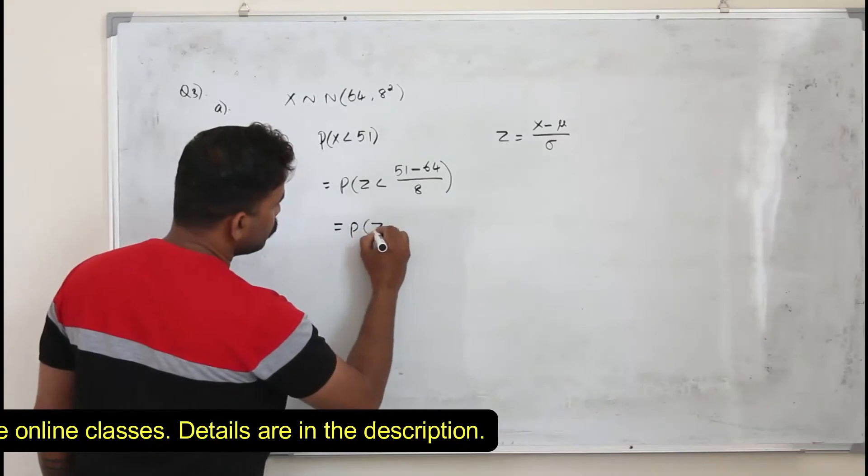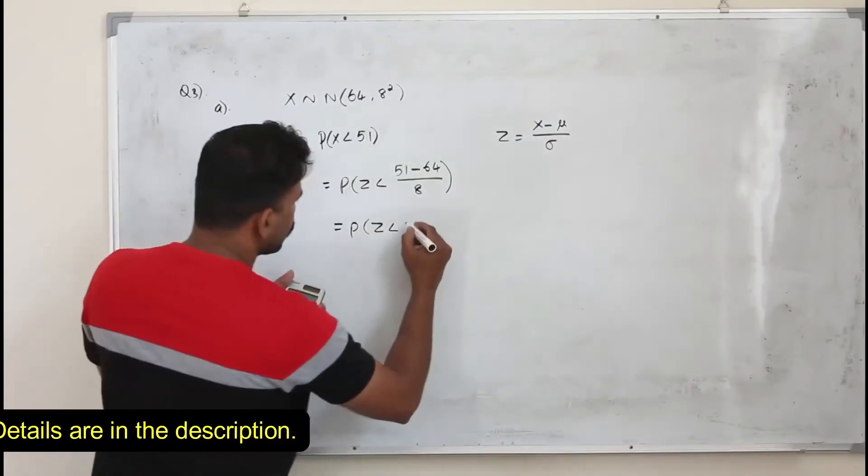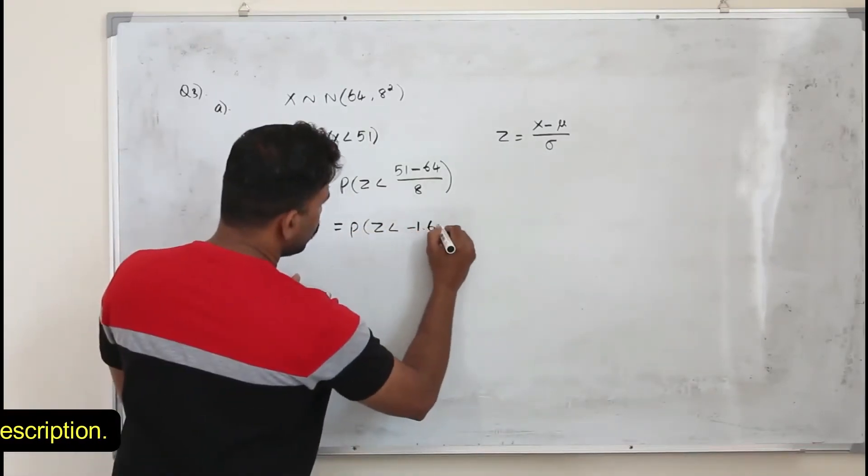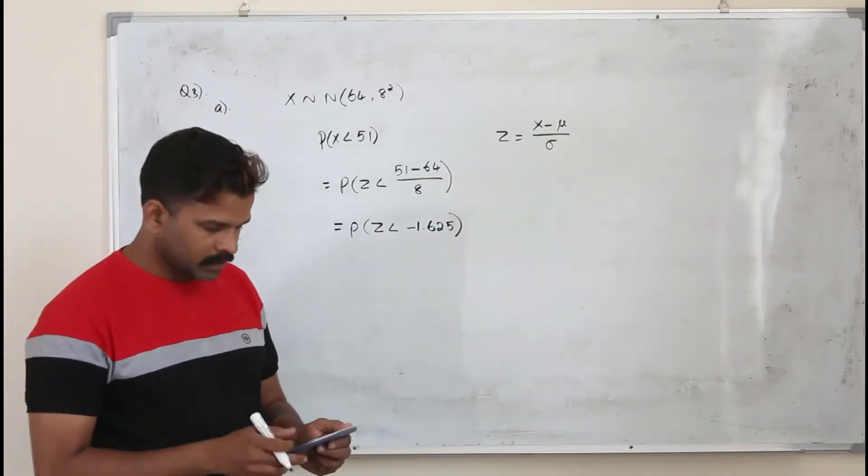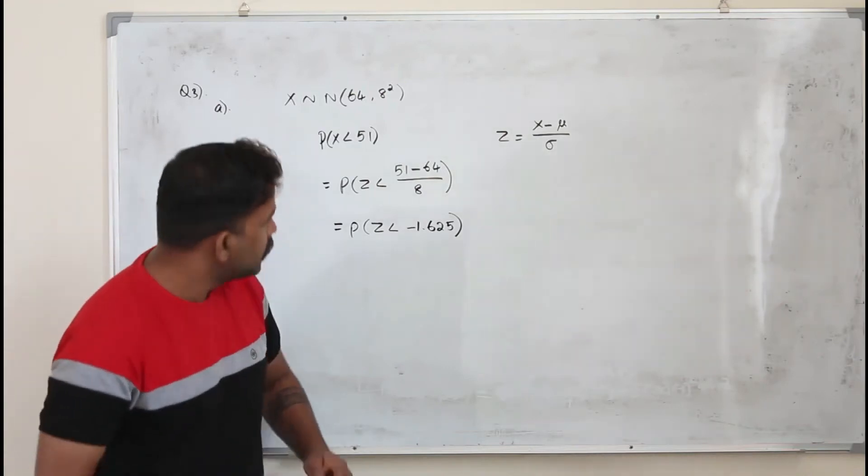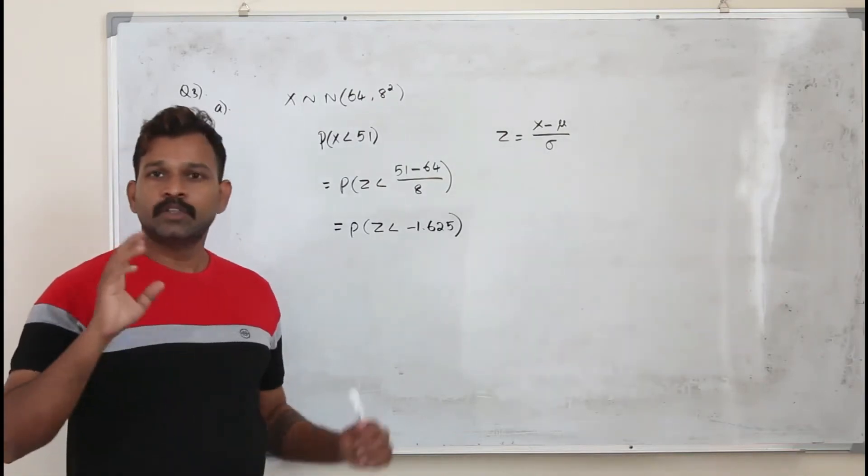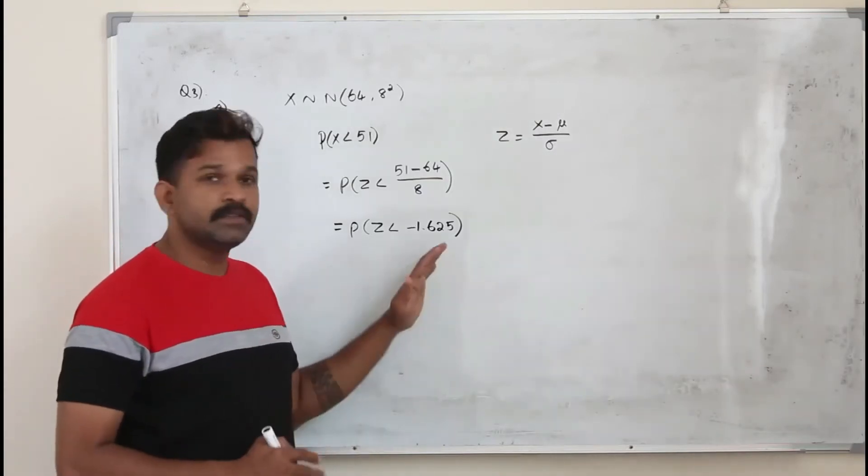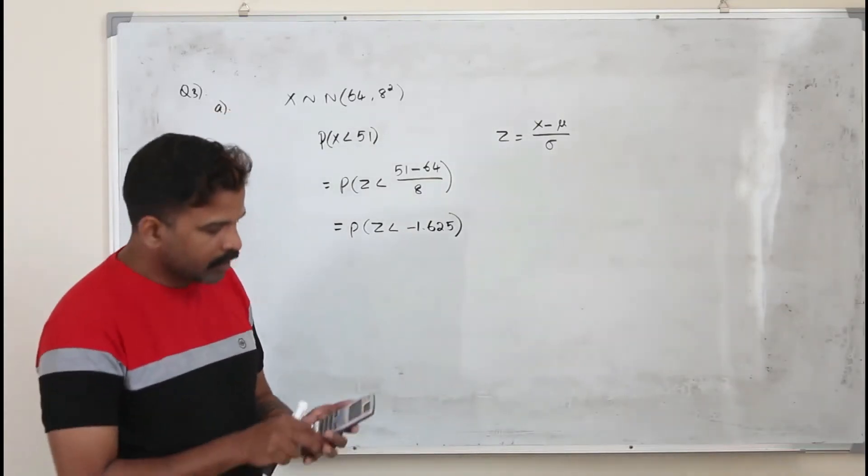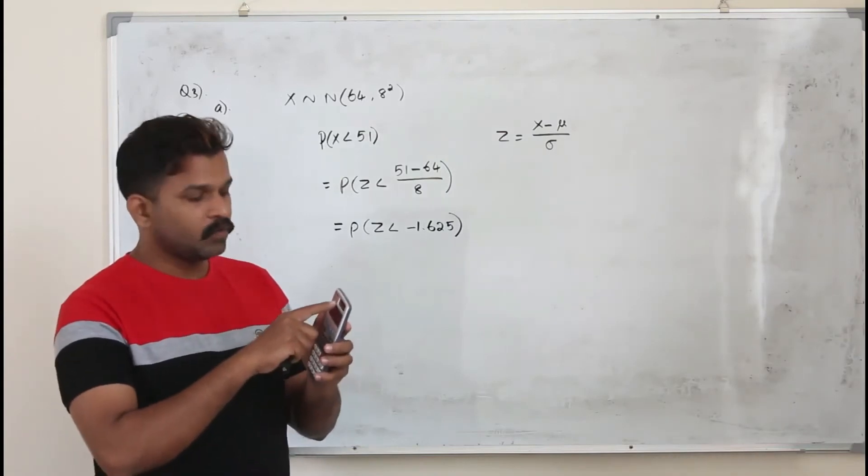Which is P of Z less than minus 1.625. Now we need to find the value of this. There are two ways you can find the value of this. First one is the shortcut method using your calculator. Here I am going to use FX-991ES+.